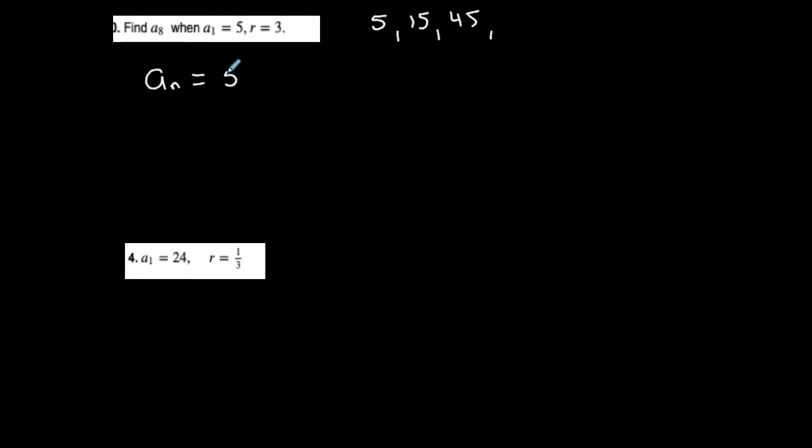The nth term is a1 times r to the n-1. So if I want to find the eighth term, I'm going to replace n with 8 and then simplify. The thing about geometric is that they get very large or very small very fast. So the eighth term is 10,935.